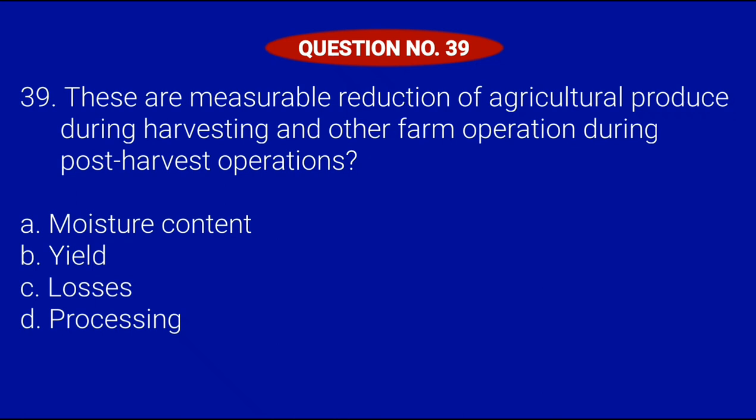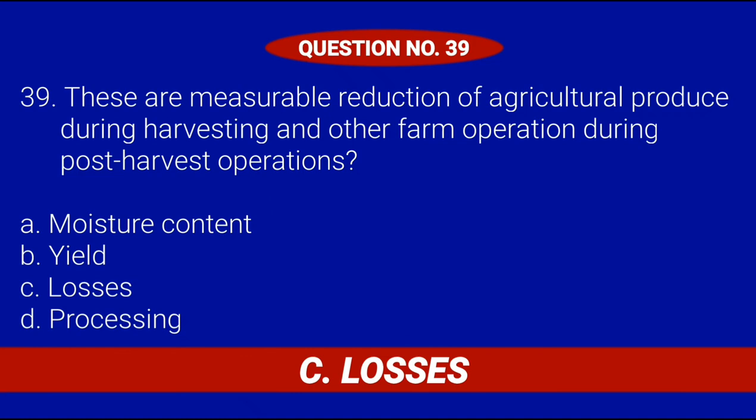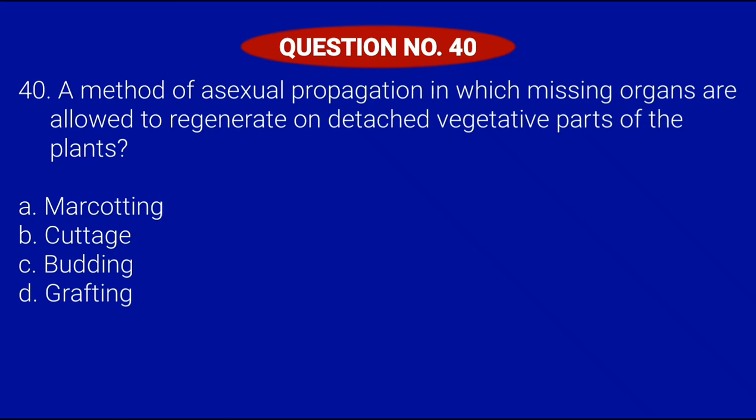Question number 39. These are measurable reductions of agricultural produce during harvesting and other farm operations during post-harvest operations. Letter A, Moisture content; Letter B, Yield; Letter C, Losses; or Letter D, Processing. Correct answer is Letter C, Losses.